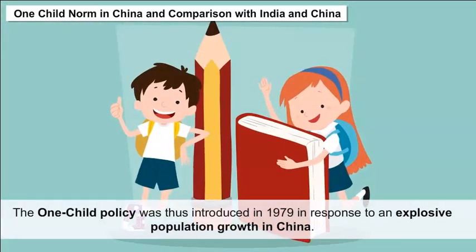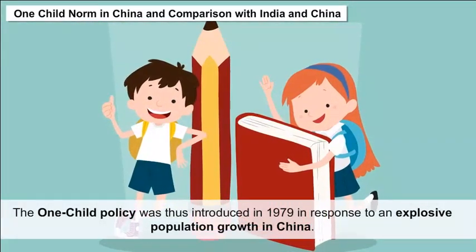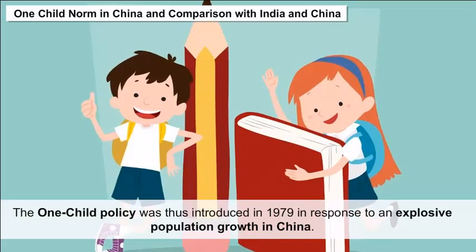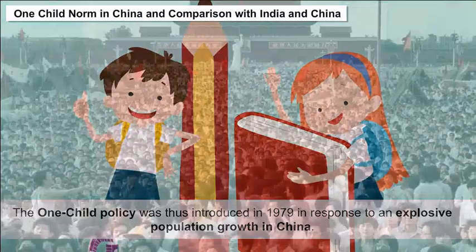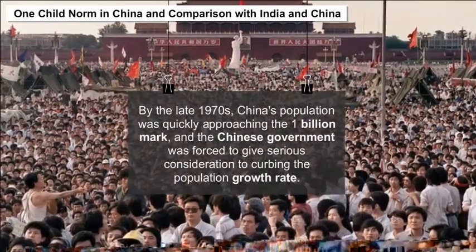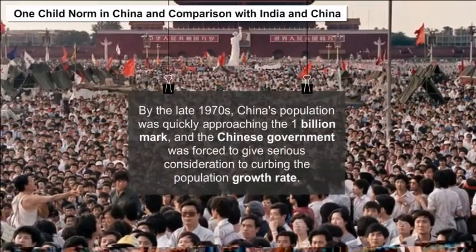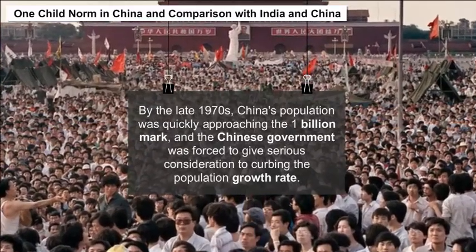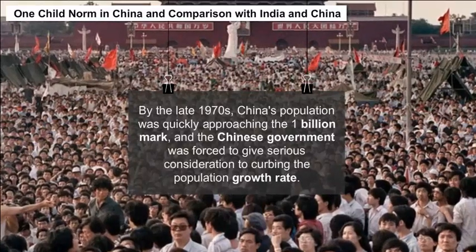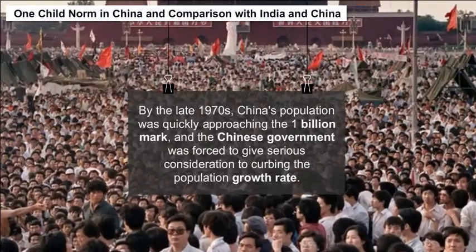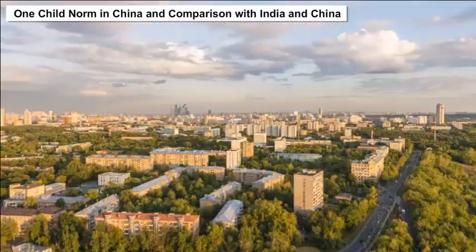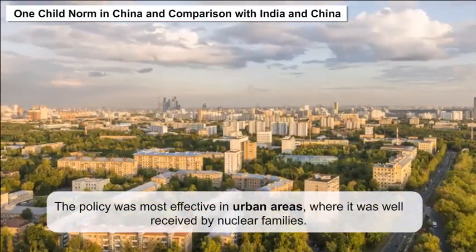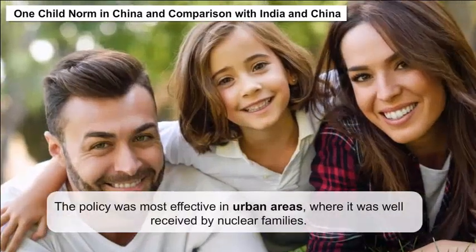The one-child policy was introduced in 1979 in response to explosive population growth in China. By the late 1970s, China's population was quickly approaching the 1 billion mark, and the Chinese government was forced to give serious consideration to curbing the population growth rate. The policy was most effective in urban areas, where it was well received by nuclear families.